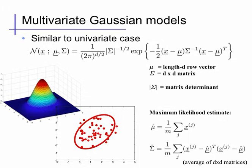A multivariate Gaussian model is simply an extension of this model to vector-valued random variables. Now x will be a vector with d values, and the distribution will be parameterized by a mean mu, which will also be a length-d vector, and a covariance matrix sigma, which will be a d-by-d matrix. It has the same exponentiated quadratic form: a constant to ensure it integrates to one, times e to the minus one-half times x minus mu (a row vector), sigma inverse (a d-by-d matrix), times x minus mu transpose (a column vector). This row times square matrix times column vector gives us a scalar number, which evaluates to the probability of the value x.